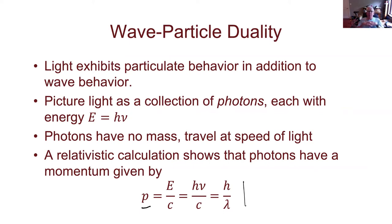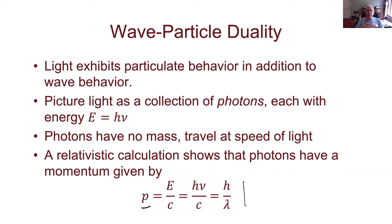What does it mean to say photons have momentum? It means fairly literally that when you're being pelted by a large number of photons, they're transferring momentum to you. Why don't you notice that? Because you're large and photons are small — their momenta are very small and they don't have any impact on you. That's why when you turn on the lights you don't feel like you just got bombarded by little particles. But there are circumstances where this actually matters, and we're going to look at a couple of different applications of the idea of photons having momentum.